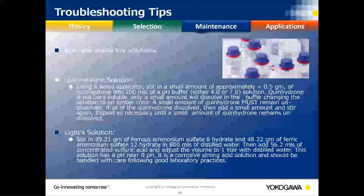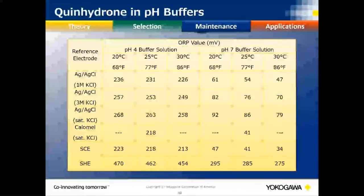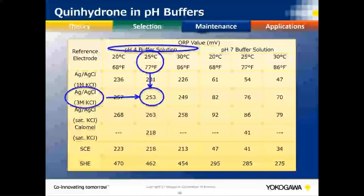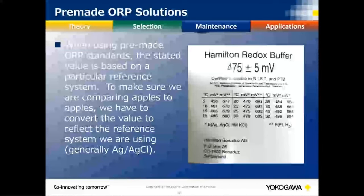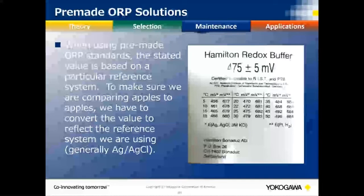With pre-made solutions, if it's within shelf life and properly maintained — meaning you took a sample, used it, and threw away the remainder without pouring it back in the bottle — you know it'll read 475 millivolts. It's a good reference point to resolve 'who's right, who's wrong' between your lab and online measurement.